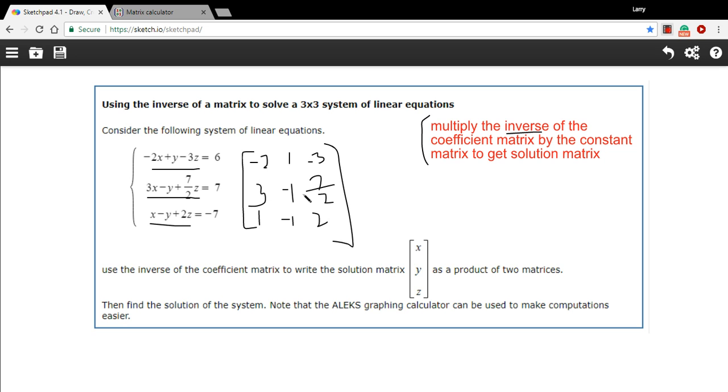What we need is the inverse of this. So I'm just going to put a little negative 1 up here to remind myself I need to take the inverse of that. And then we're going to multiply that by the constant matrix, which is this set of numbers right here. So that's going to be multiplied by 6, 7, negative 7.